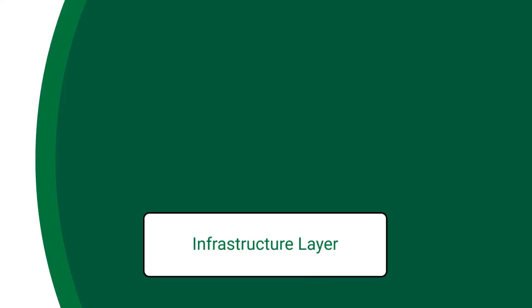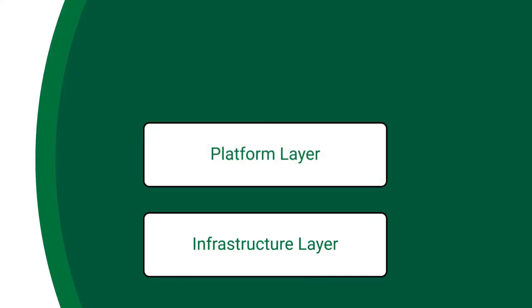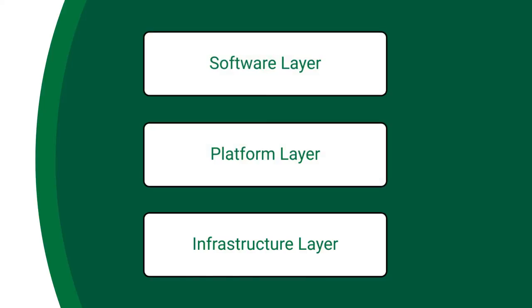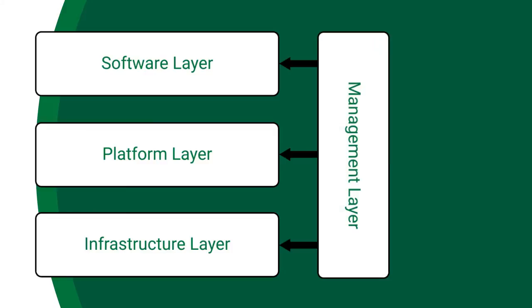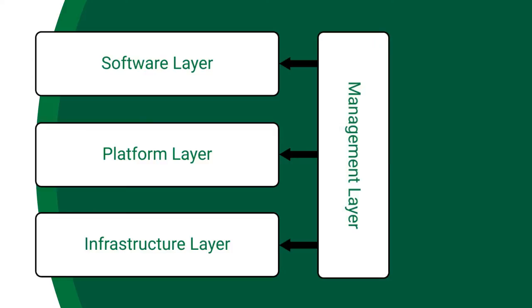The cloud consists of a classical three-tier architecture that includes an infrastructure layer, platform layer, and a software layer. They are managed by a collection of management tools that include such capabilities as deployment, provisioning, configuration management, monitoring, reporting, and more.